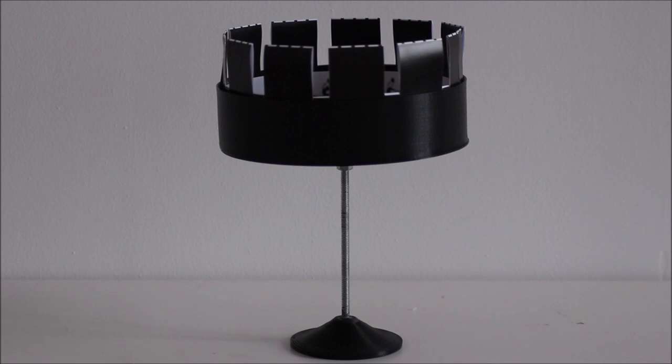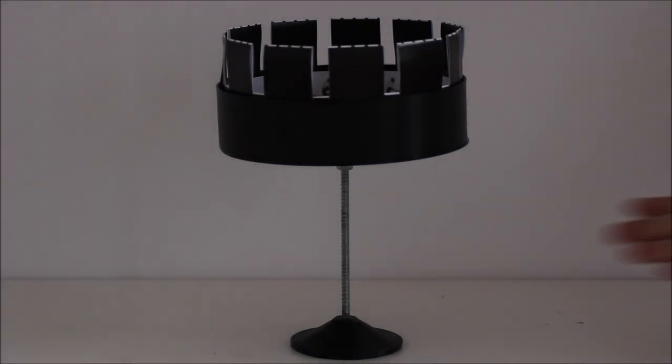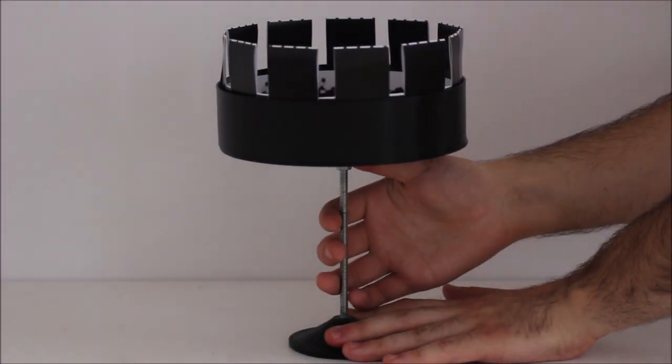The Zoetrope consists of a cylinder with slits cut vertically in the sides. On the inner surface of the cylinder is a band with images from a set of sequenced pictures.